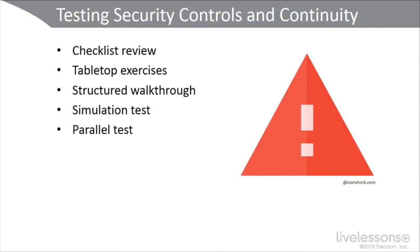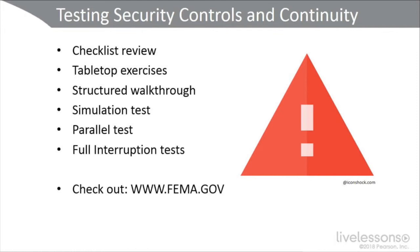A parallel test is often used in disaster recovery planning where you bring up your cold, warm, hot, mobile, or shared site in parallel — your remaining organization is still operational throughout the scenario and drill. Finally, there's the full interruption test. In business continuity, this is rarely done because you're bringing down the original site or department affected, totally disrupting the business due to cost and productivity impact. But it is the most effective type of test. Check out www.fema.gov for more testing and scenario-based exercises.